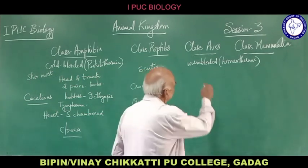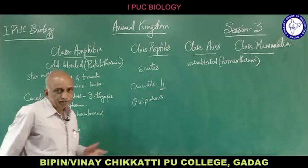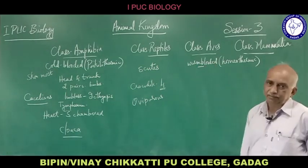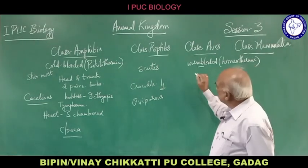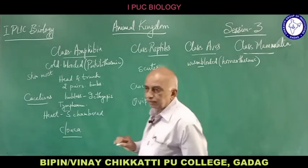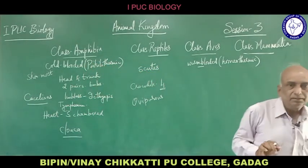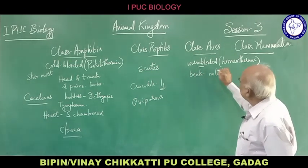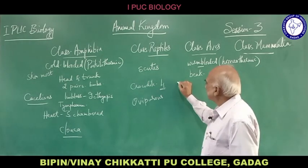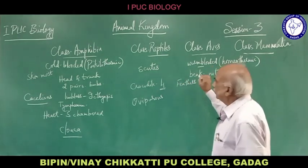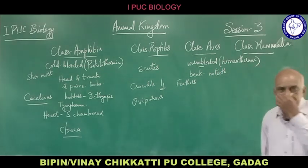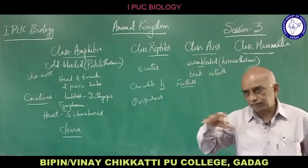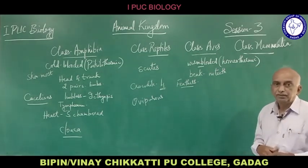Class Aves includes all birds. They are warm-blooded animals. The body is divided into head, neck and abdomen. Jaws are absent; instead the head has a beak without teeth. The body is covered with feathers, which act as insulation and enclose air for flight purposes. There are two pairs of limbs, but the front limbs are modified into wings.